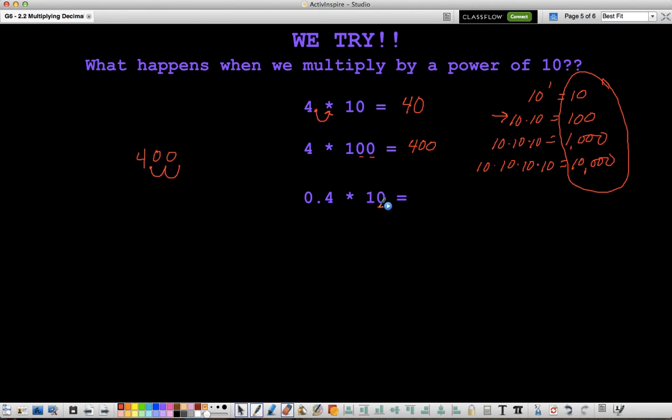So in this case, I have to multiply by 10, and I have to move the decimal once to the right. Well, my decimal is in front of the 4 this time, so when I move it once to the right, I actually get 4 as my answer.